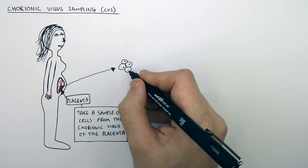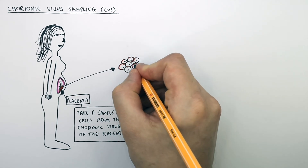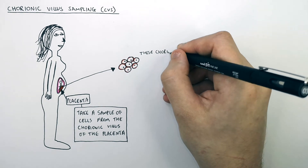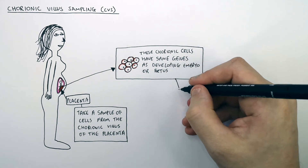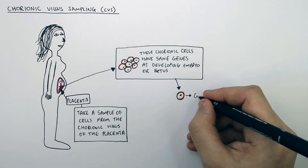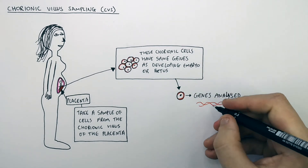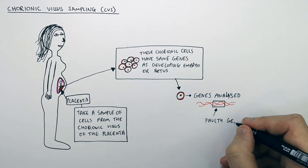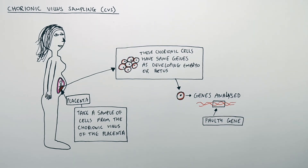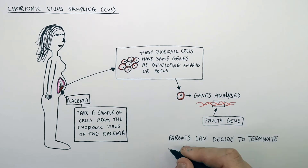These represent cells from the chorionic villus that is on the placenta — these chorionic cells have the same genes as the developing fetus. You then analyze the genes of these cells, and as you can see here, this gene has been found to have a fault in it — it's a mutated allele. This means that the child has inherited the genetic disorder that the mother or father has. So parents can decide to terminate the pregnancy or not.